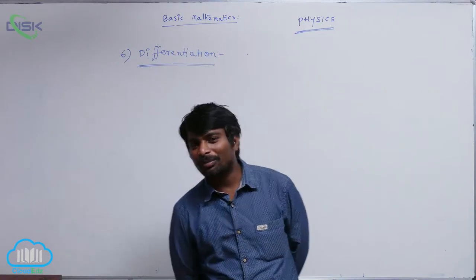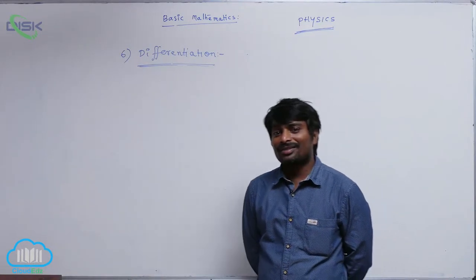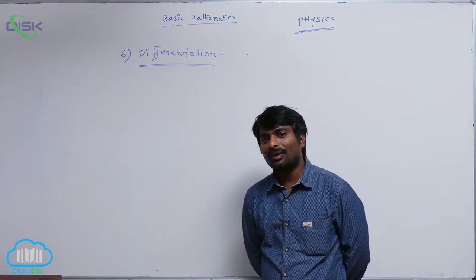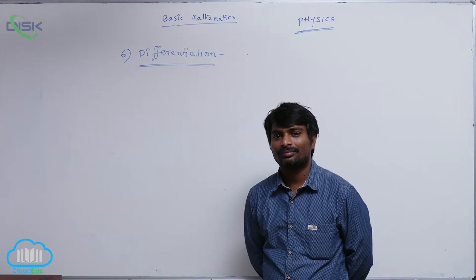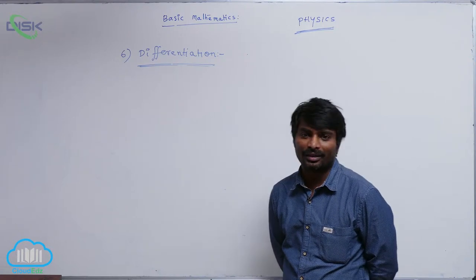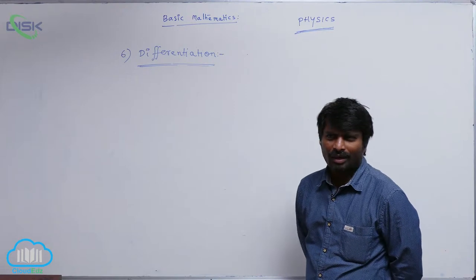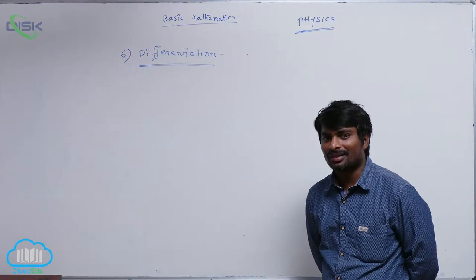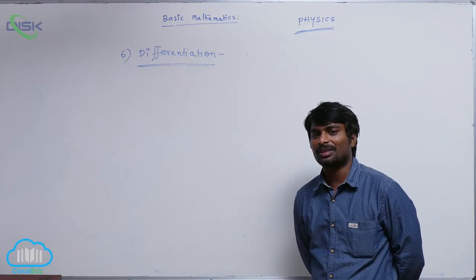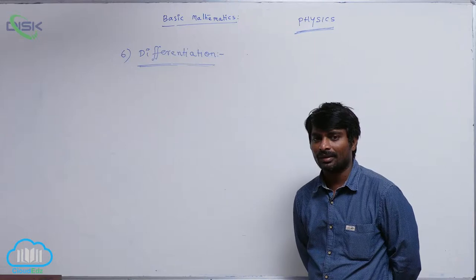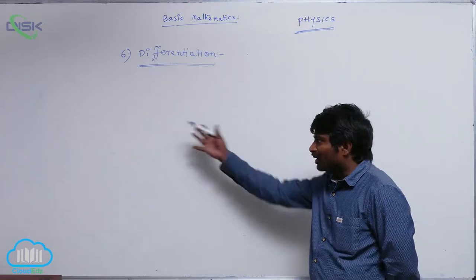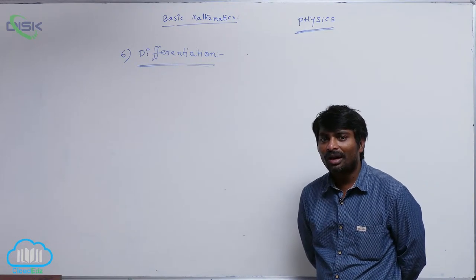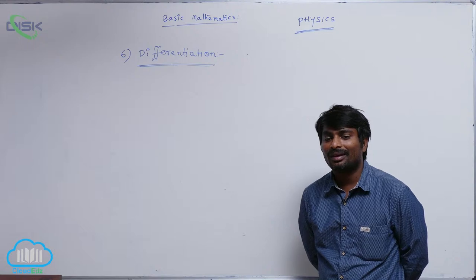We have studied what average change of y with respect to x means, how to calculate it mathematically, and how to calculate it from a graph. We have also studied instantaneous change of y with respect to x, which is called differentiation of y with respect to x — dy by dx — and mathematically how to calculate it, including solving all problems and calculating from a graph.